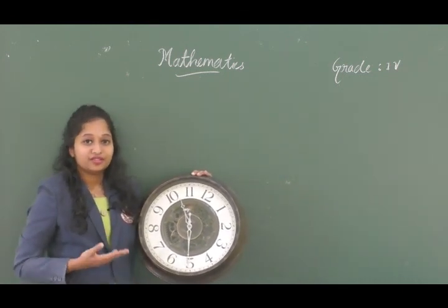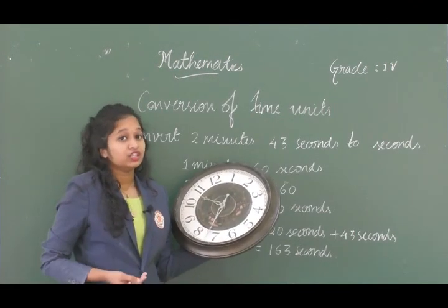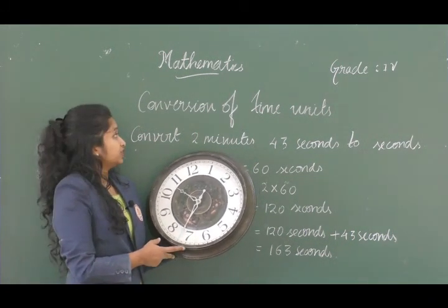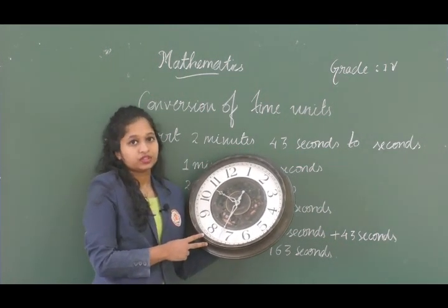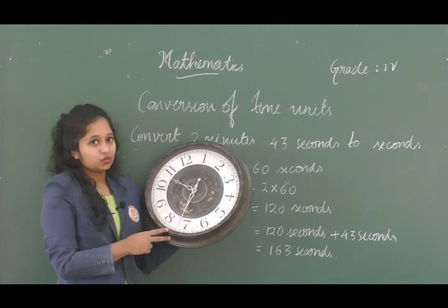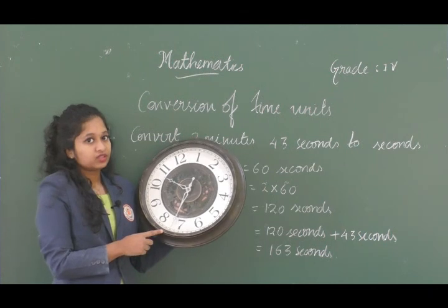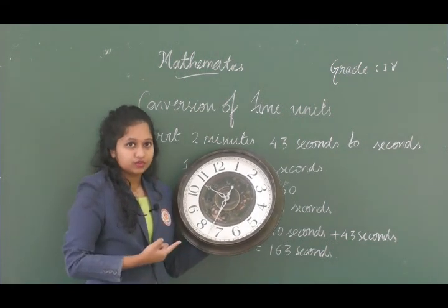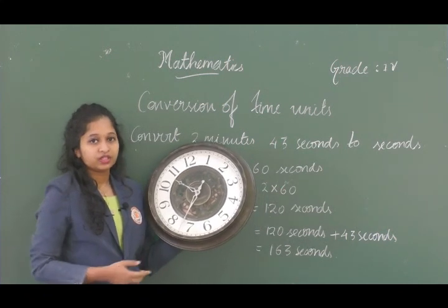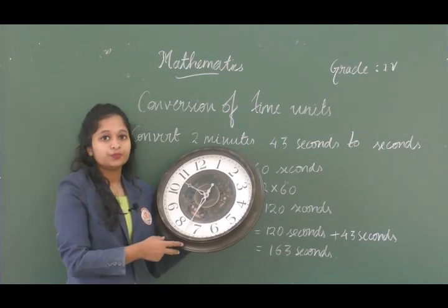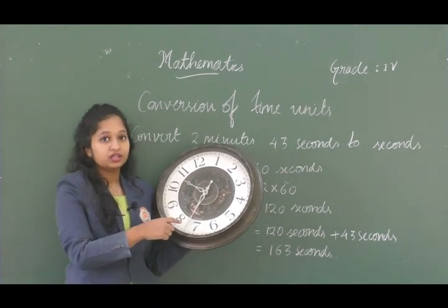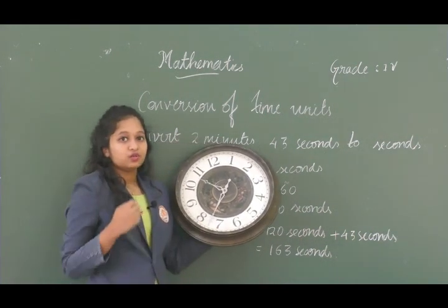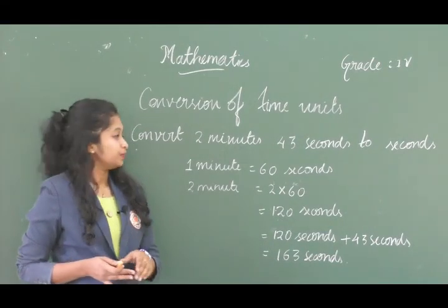Now let's move on to the conversion of time units. One minute is equal to 60 seconds — the second hand completes one full round to make one minute. One hour is equal to 60 minutes — the minute hand takes one complete round to make one hour.